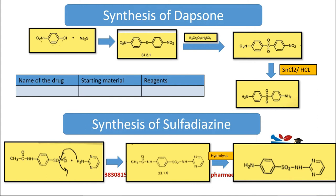Once you know the name of a drug and its starting material, you can automatically predict the structure. This applies to sulfadiazine and all other drugs in synthesis. Make this table in your notebook and start today — as you study chemistry and come across any synthesis, keep adding names to the list. By the time you prepare for GPAT, your table will already be complete.